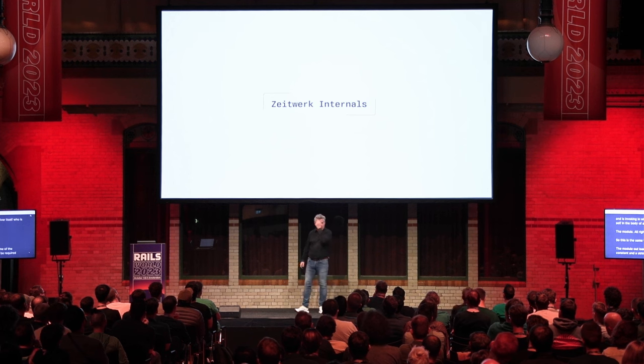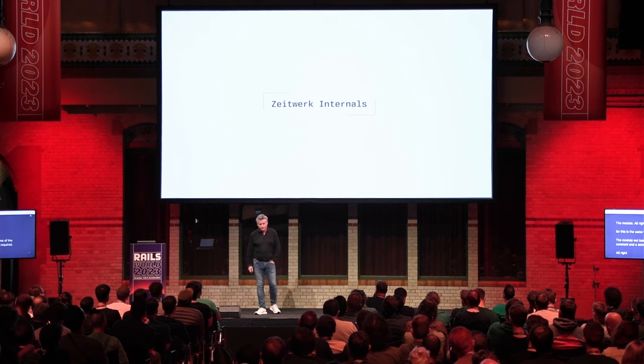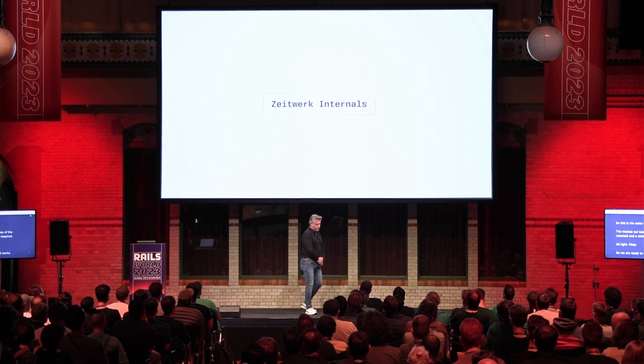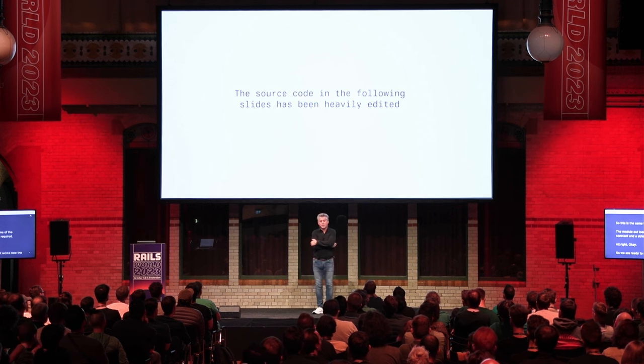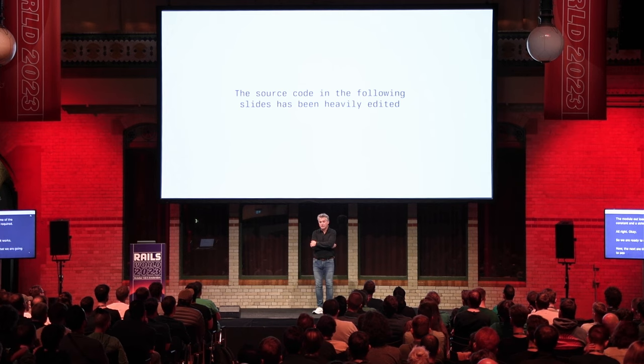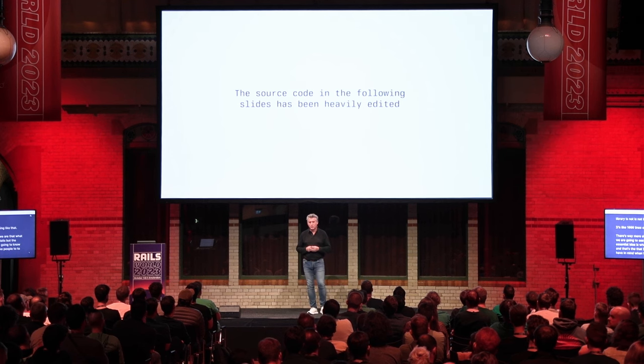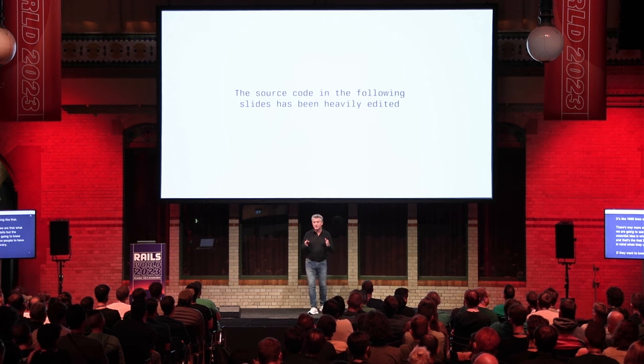Now we are ready to see how Zeitwerk works. The code we are going to see is heavily edited — the library is around 1000 lines, but we are focusing on the essential ideas. These are the key ideas that provide the context for understanding how it's implemented.